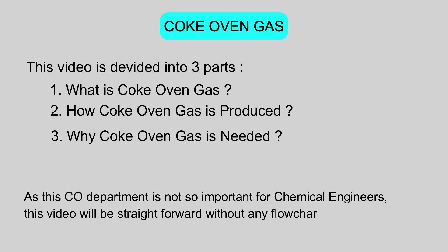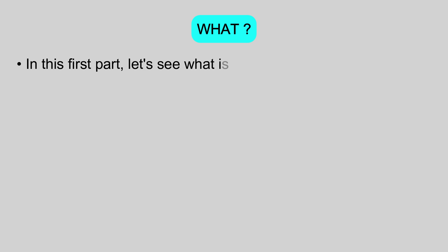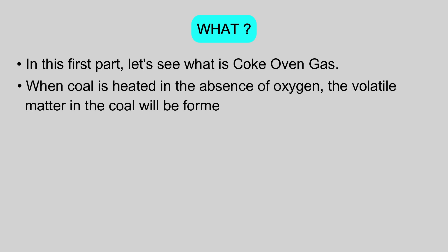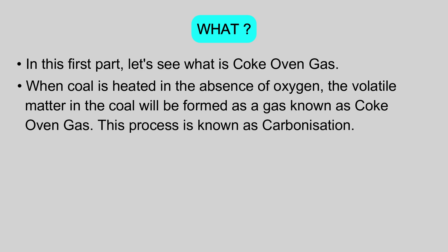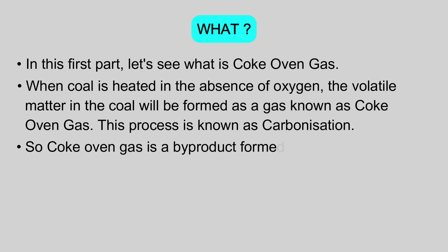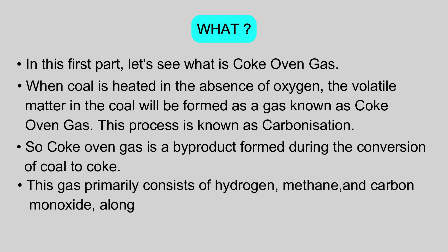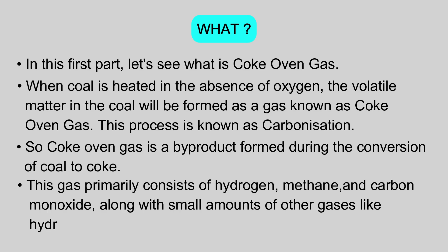In this first part, let's see what is coke oven gas. When coal is heated in the absence of oxygen, the volatile matter in the coal will be formed as a gas known as coke oven gas. This process is known as carbonization. So coke oven gas is a byproduct formed during the conversion of coal to coke. This gas primarily consists of hydrogen, methane, and carbon monoxide, along with small amounts of other gases like hydrogen sulfide and ammonia.